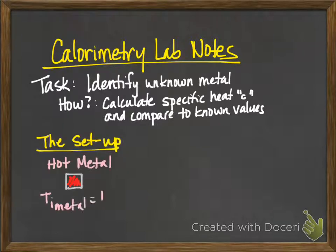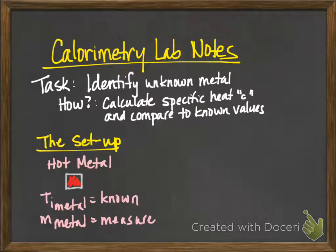So here's the setup for the lab. We're going to start off with a piece of hot metal, and the initial temperature of that metal will be known, and we can measure the mass of that metal because we'll need to know both of those things.